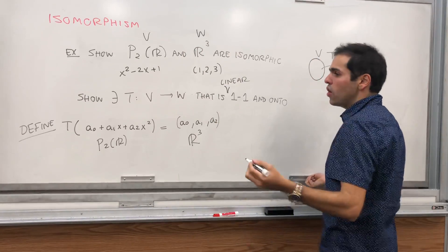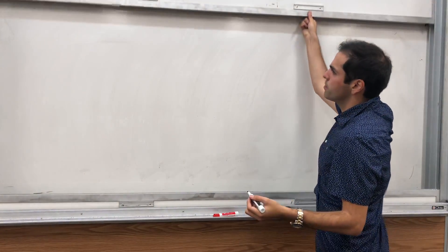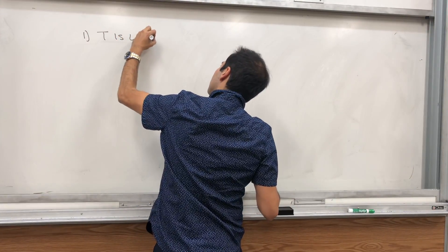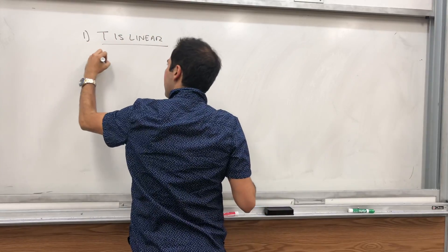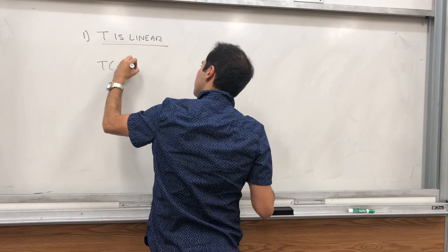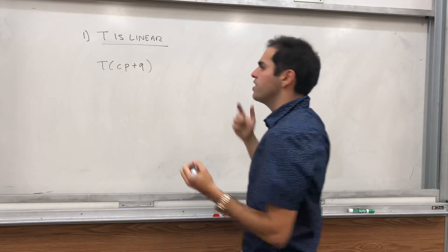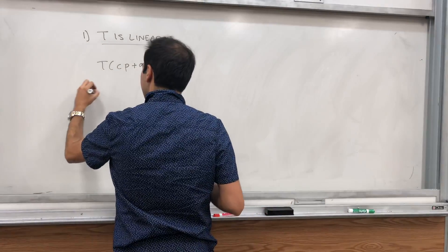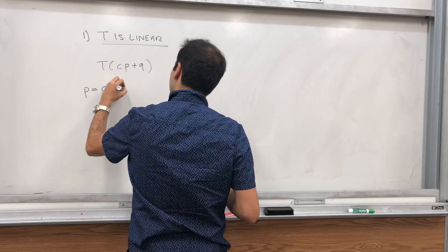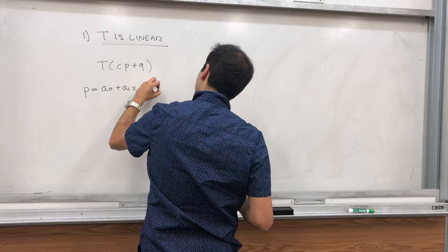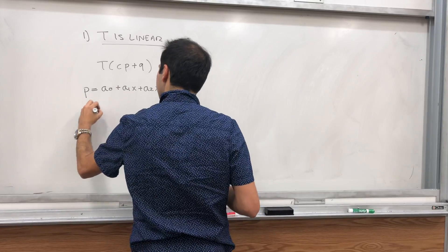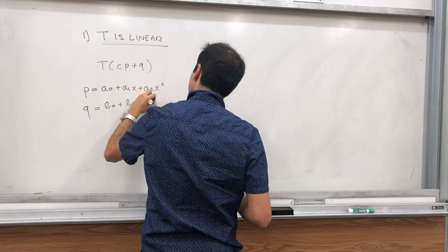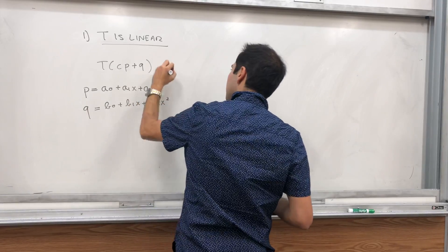Okay, let's show it's linear. So let's calculate T of Cp plus Q, where P and Q are polynomials of degree less than or equal to 2. So P is a0 plus a1x plus a2x squared, Q is b0 plus b1x plus b2x squared.